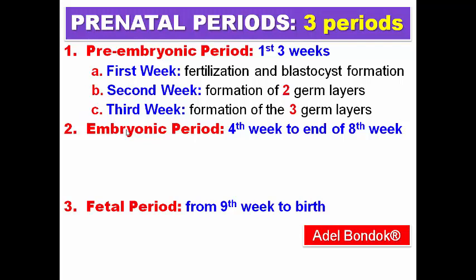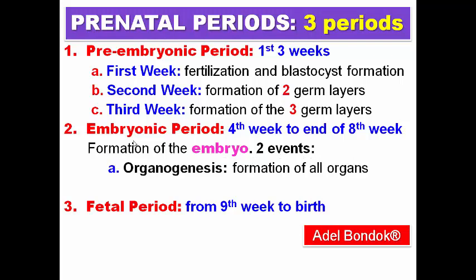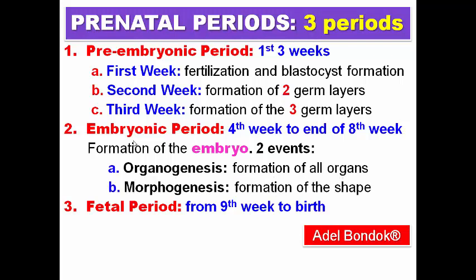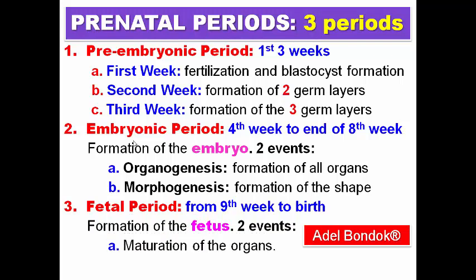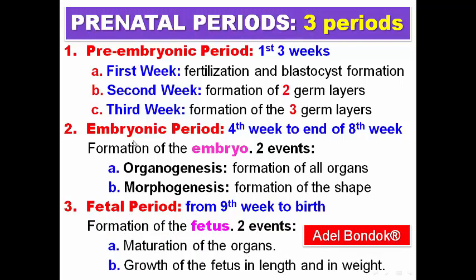The embryonic period is the formation of the embryo, characterized by two major events: formation of the organs, called organogenesis, and formation of the shape, called morphogenesis. Then the fetal period, from week nine till birth. During this period there is no new formation of any organ, but maturation of organs and growth of the fetus in length and weight.